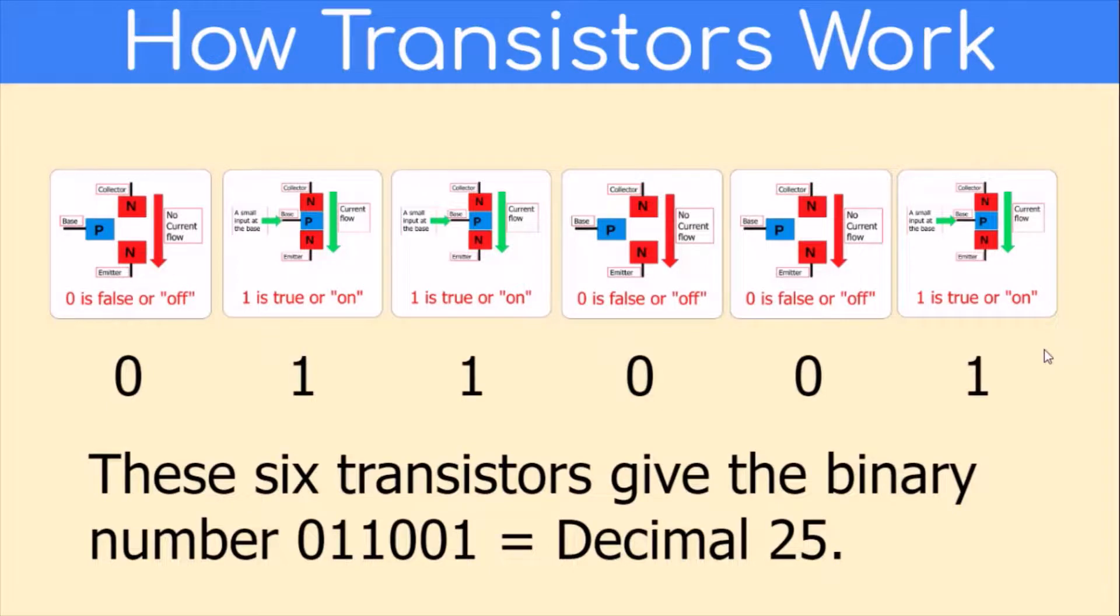These six transistors here give the binary number 011001. These six transistors give the binary number which is the decimal 25.